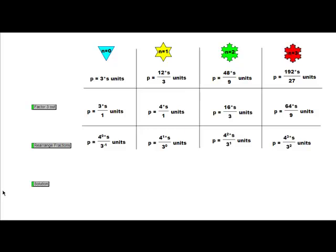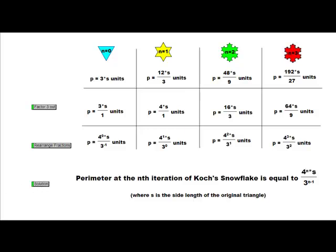So, we come up with the following solution for the perimeter. The perimeter at the nth iteration of Koch's snowflake is equal to 4 to the nth times S, all over 3 to the n minus 1 power.